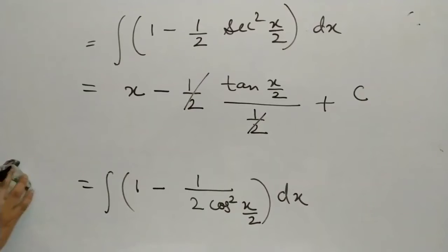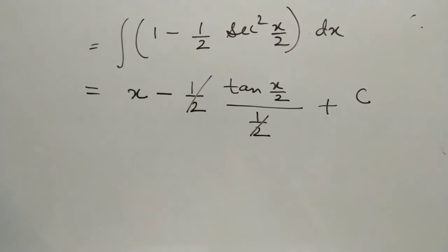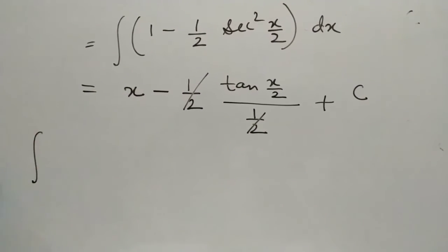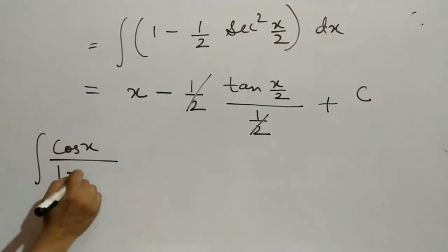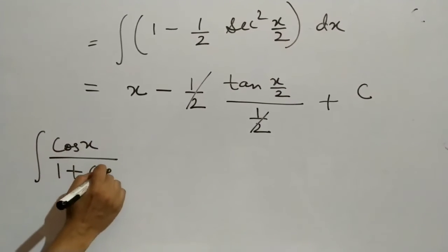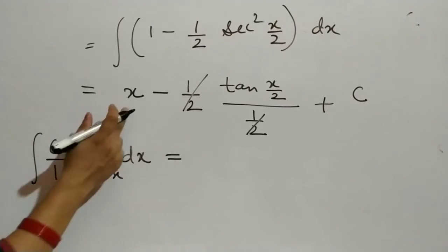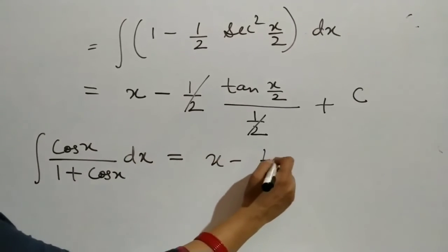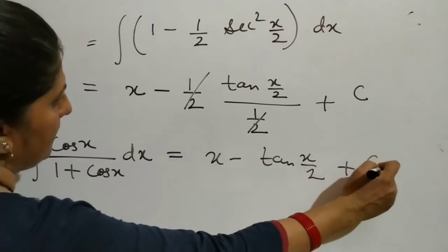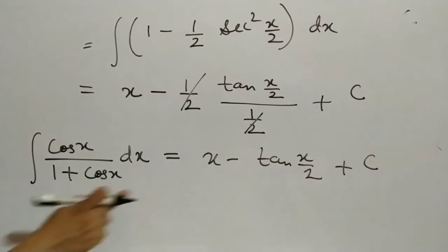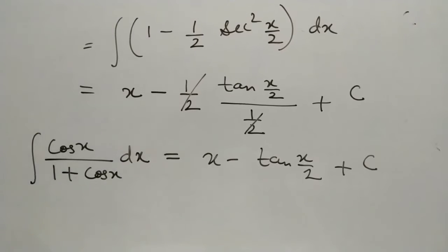Simplifying, the integral of cos x over (1 plus cos x) with respect to x is equal to x minus tan(x by 2) plus c. This is the integral of the given function.